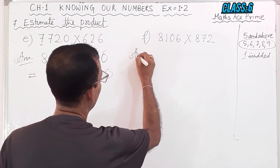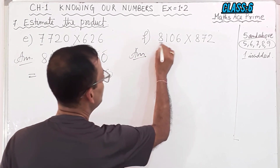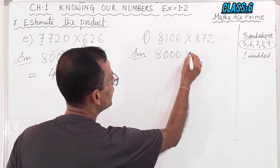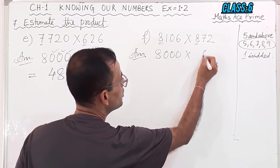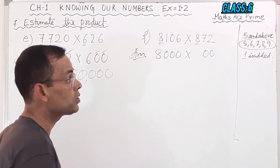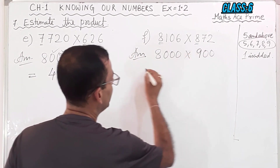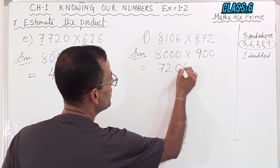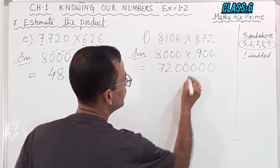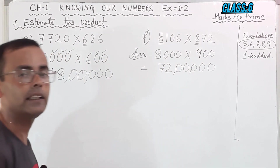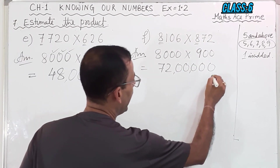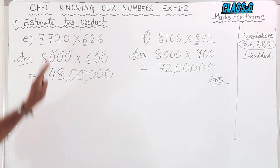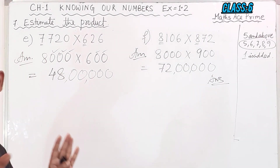Now for answer F: I will round off here, and it will become 8,000. Here I will round off, and for these 2 digits I will put 2 zeros, and 8 will become 9 because the next digit is 5 and above. So 8 into 9 is 72. There are 5 zeros, so put 5 zeros and then the comma. And this is the answer. I hope E and F also you have understood nicely.